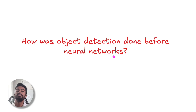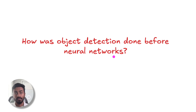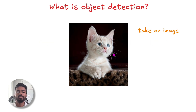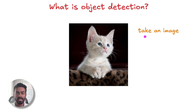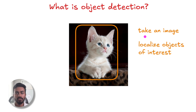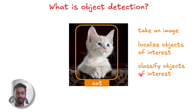Greetings fellow learners. In this video we are going to talk about how object detection was done before neural networks. So what is object detection? We take an image, we then localize the objects of interest in the image, and then we classify the objects of interest too. That's object detection.